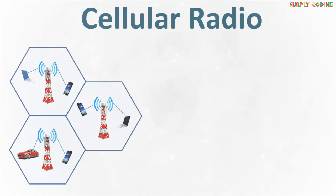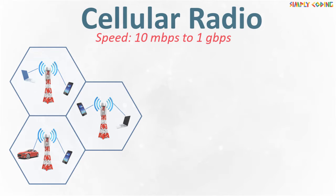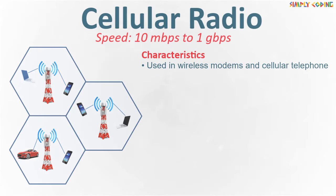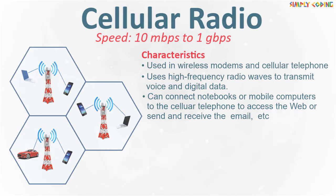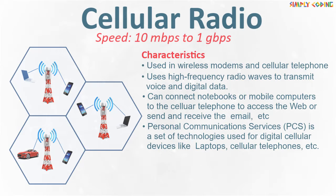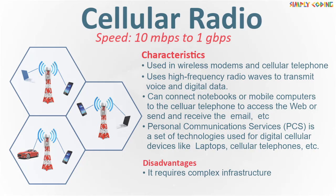Next is cellular radio. With 4G, the data transmission speed is between 10 Mbps to 1 Gbps. It is specifically used in wireless modems and cellular telephones. The cellular telephone uses high frequency radio waves to transmit voice and digital data. Some mobile users also connect notebooks or mobile computers to cellular telephones to access the web or send and receive email. Personal Communication Services (PCS) is a set of technologies used for digital cellular devices like laptops and cellular telephones. Its disadvantage is that it requires complex infrastructure and a well-planned frequency spectrum distribution beforehand.